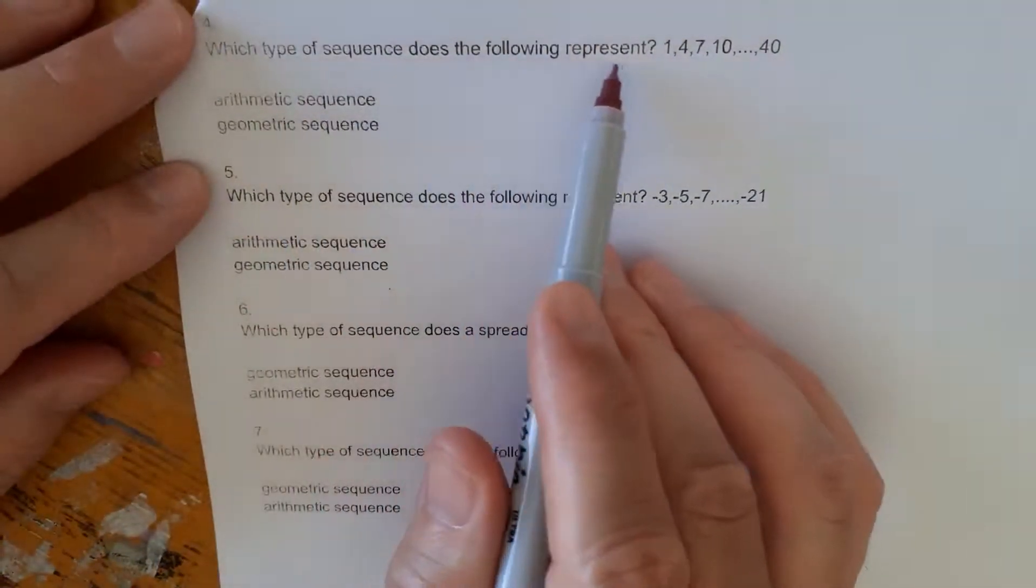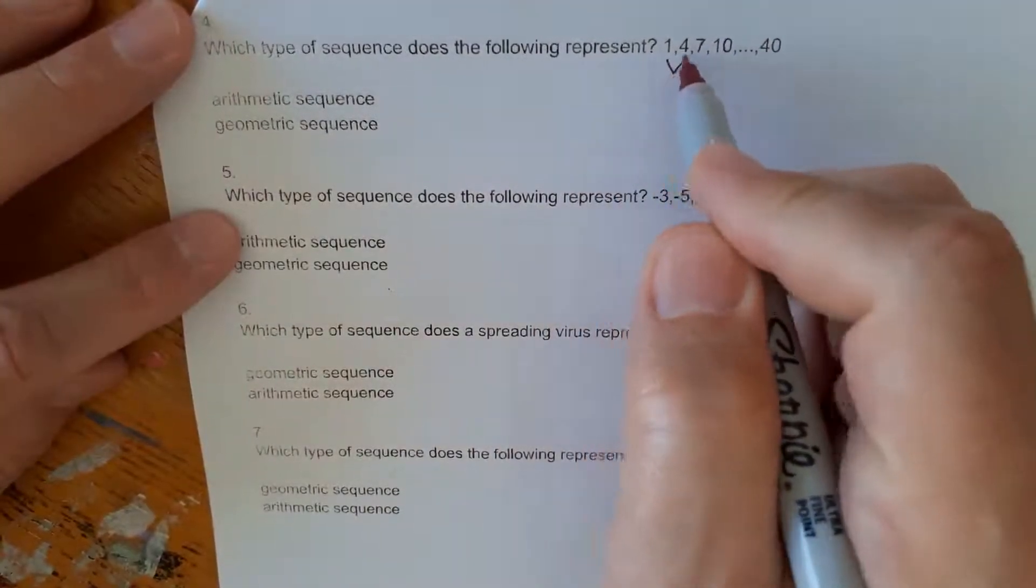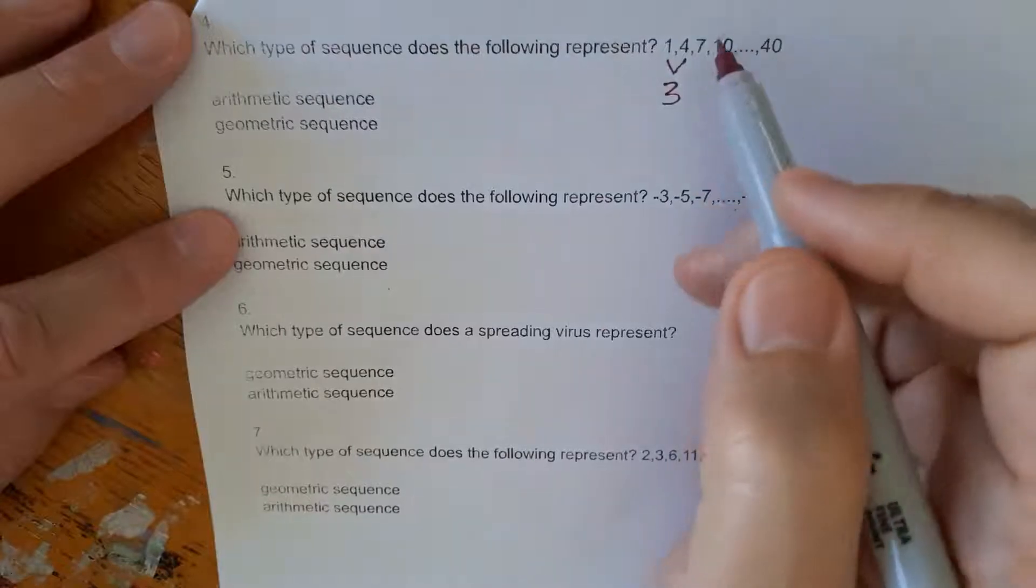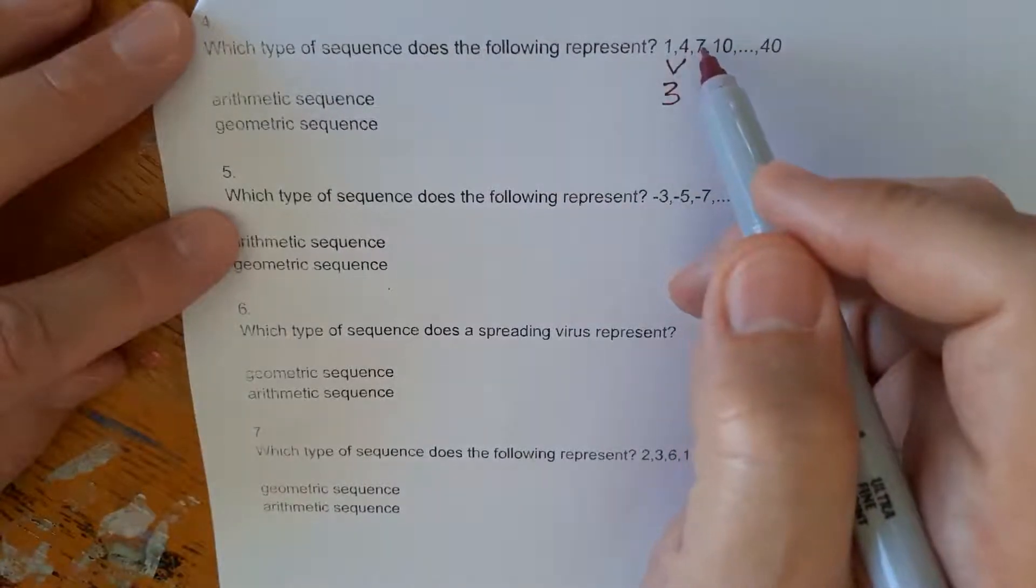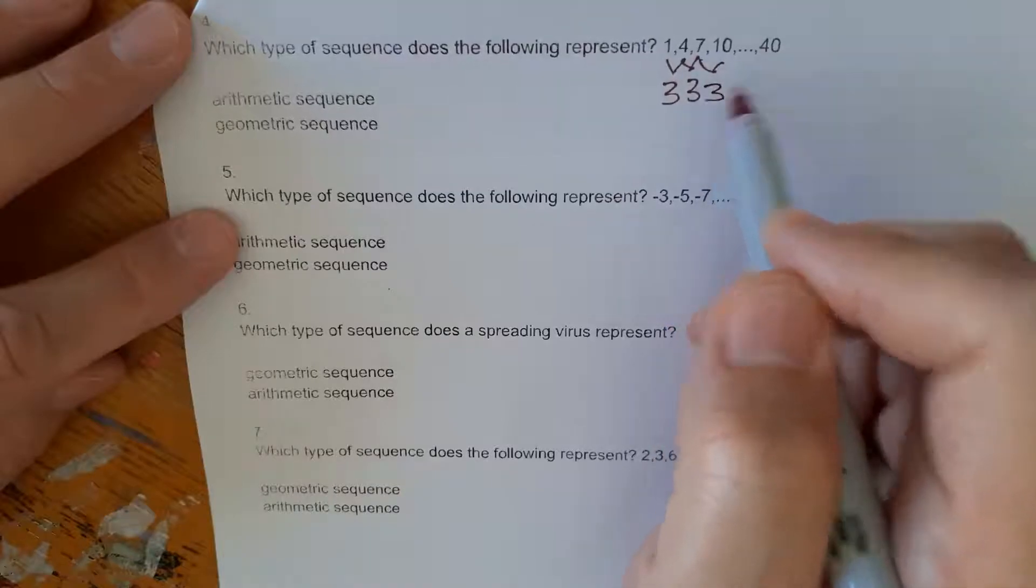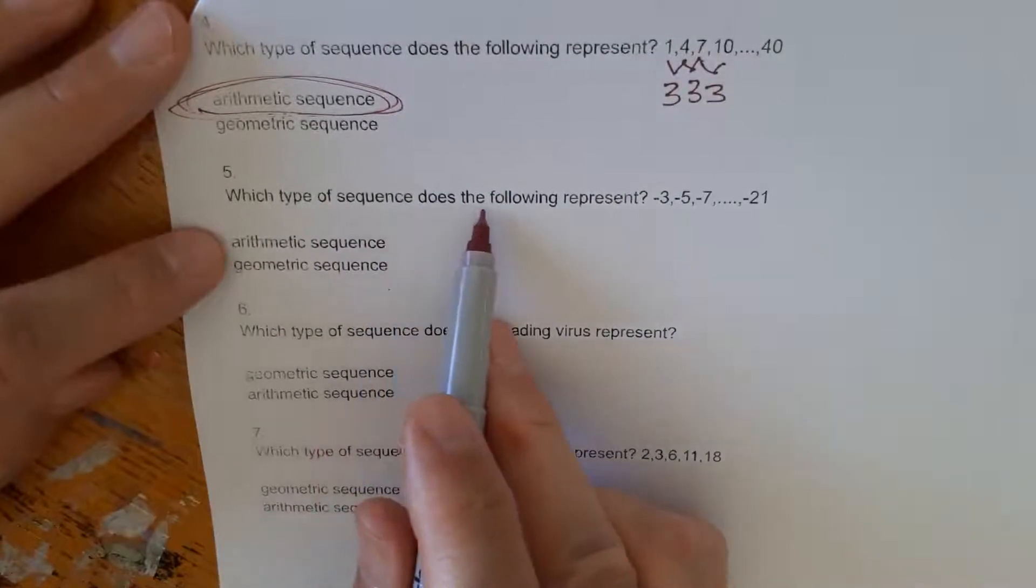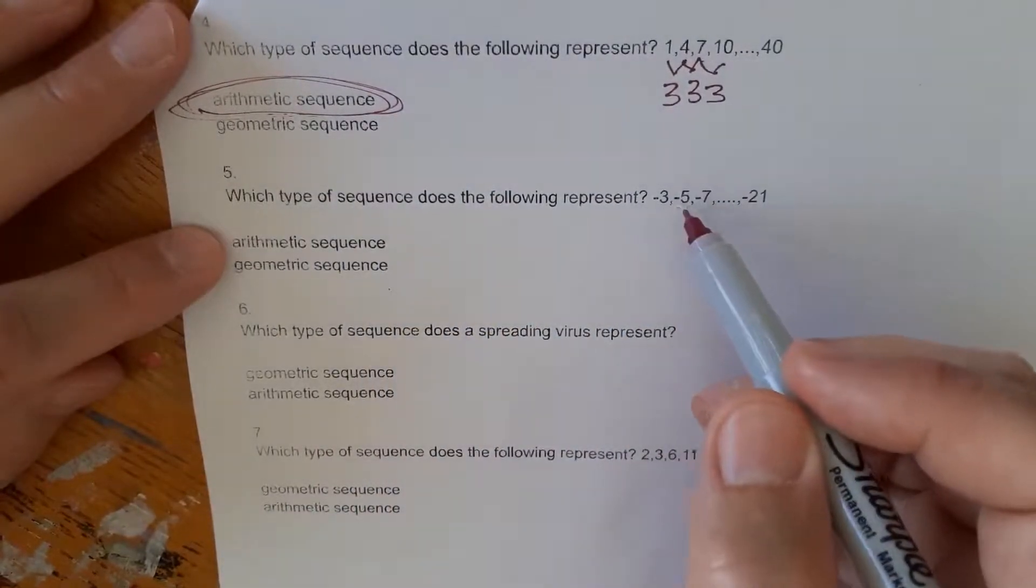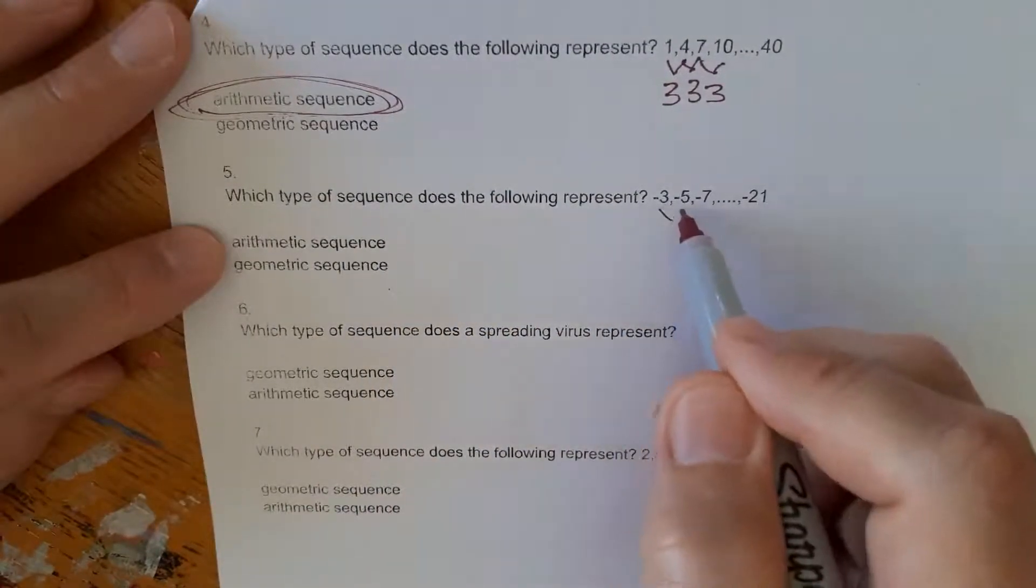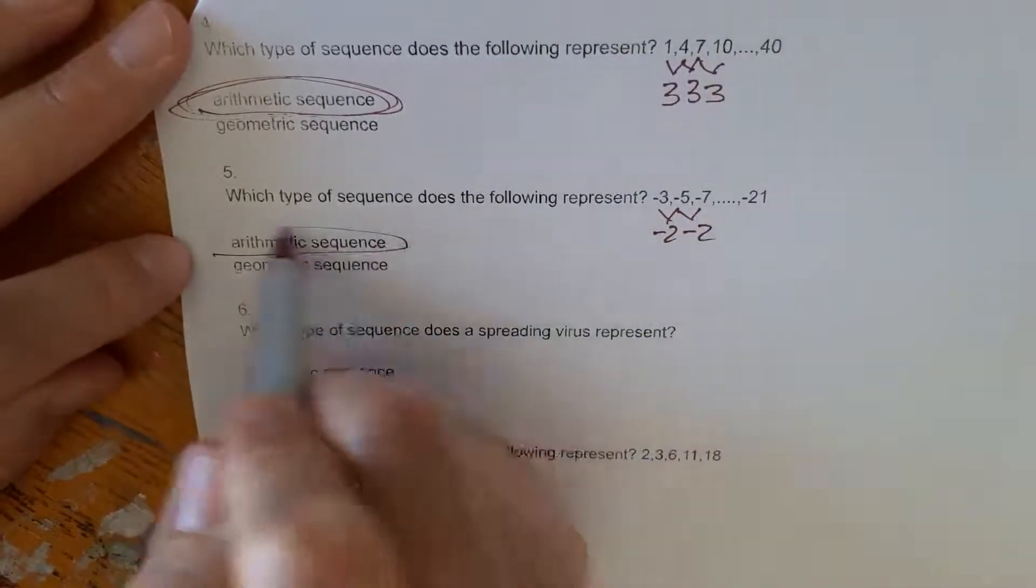So which type of sequence does the following represent? 1, 4, 7, 10, and so forth. So what's the difference between 1 and 4? 3. What's the difference between 4 and 7? 3. What's the difference between 7 and 10? 3. It's the same again. So arithmetic sequence, right? Which type of sequence does the following represent? Negative 3, negative 5, negative 7. So here, negative 2, negative 2. This seems consistent. This is an arithmetic.